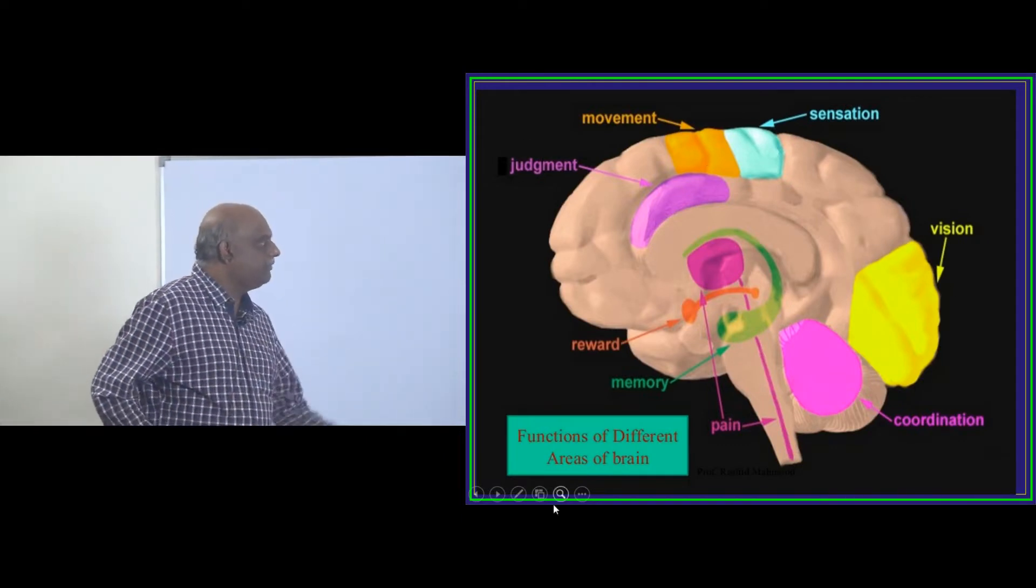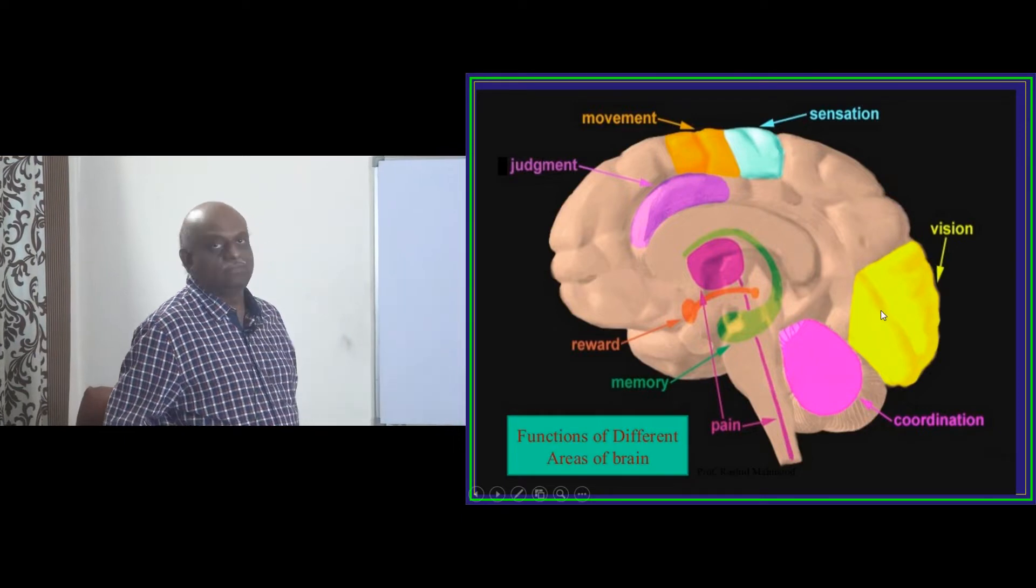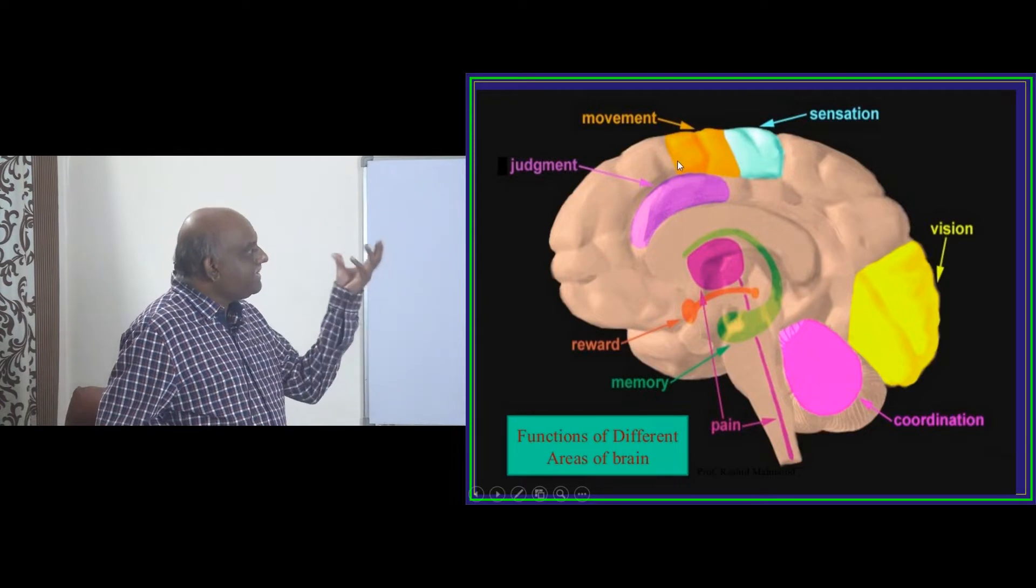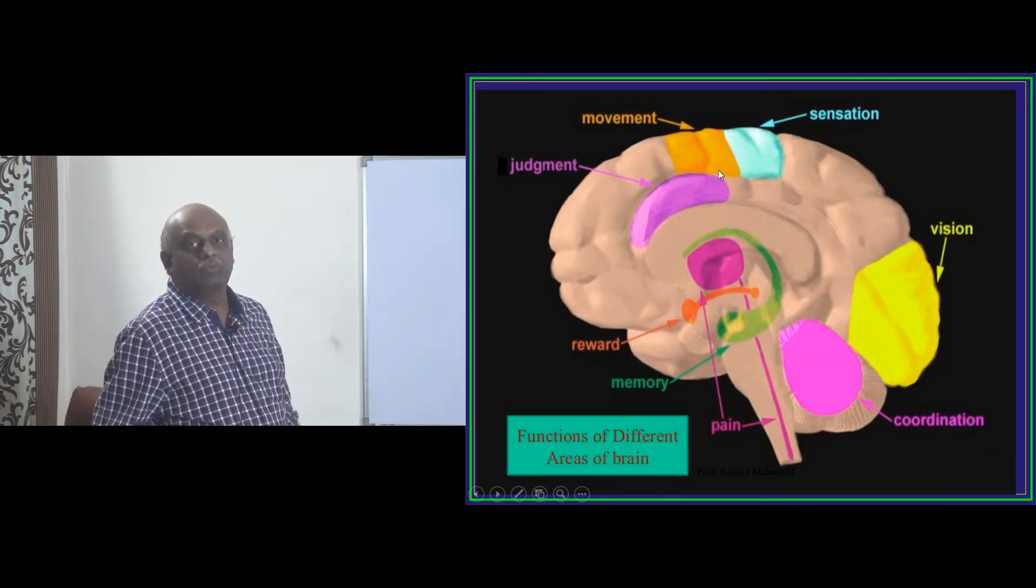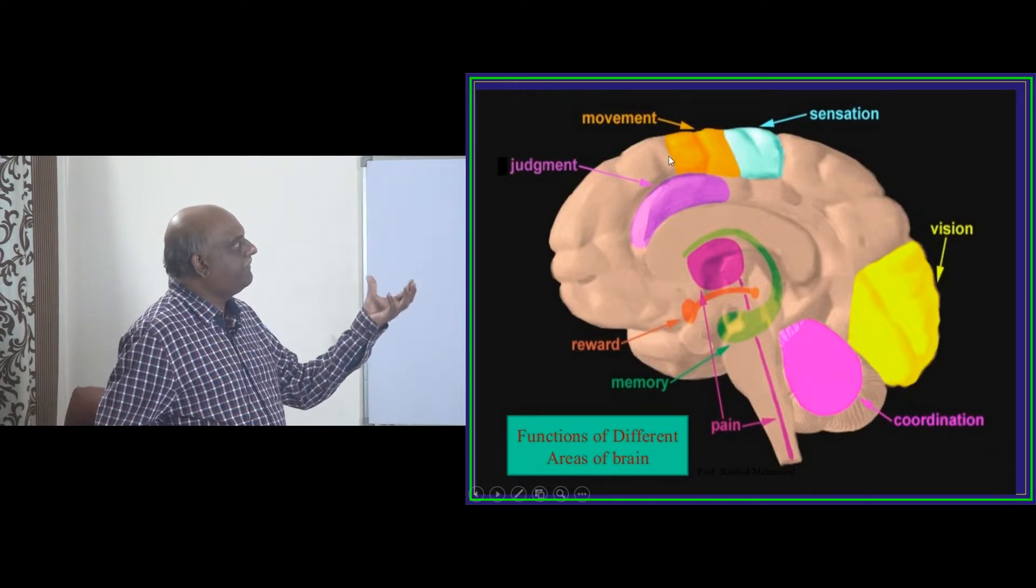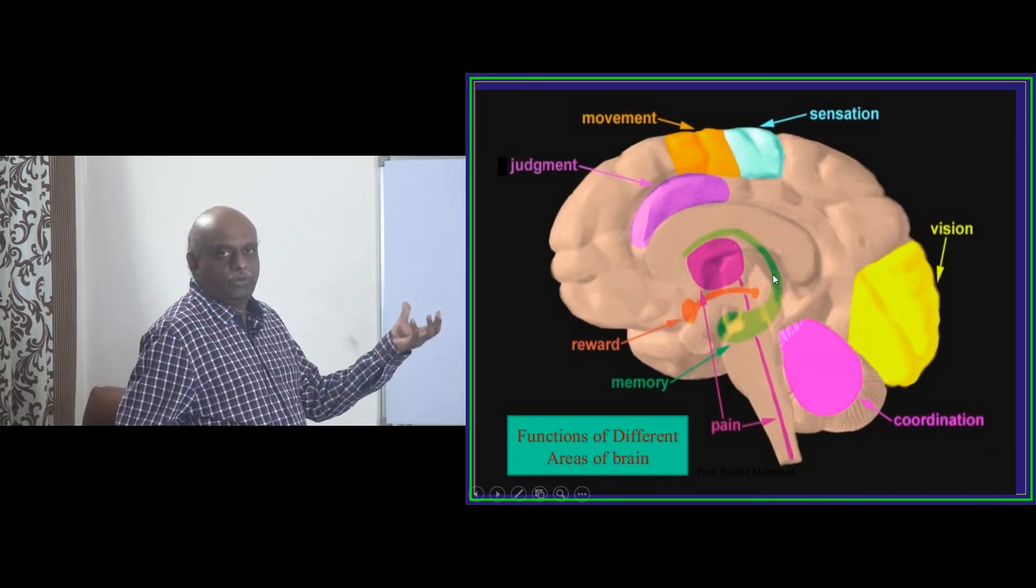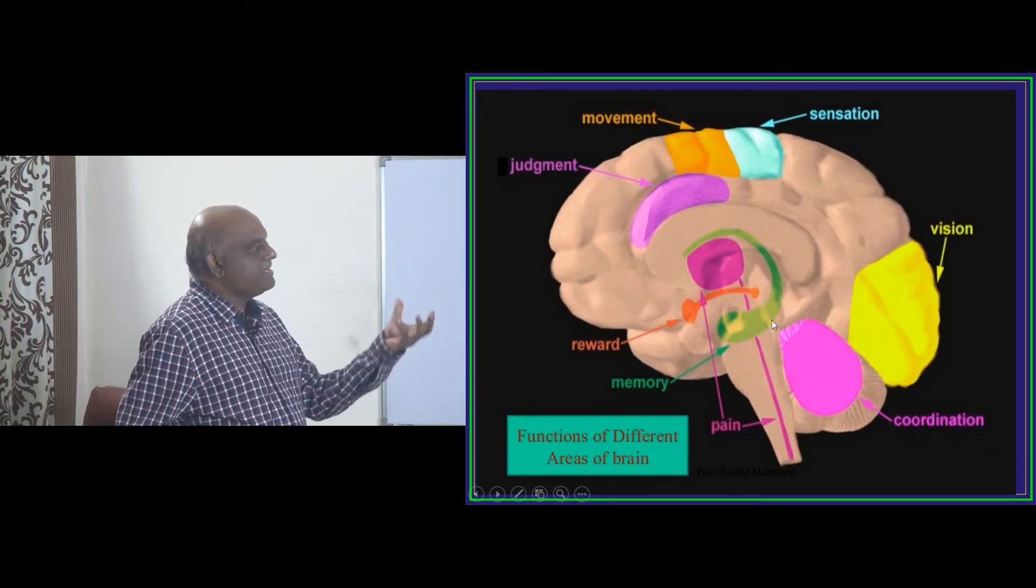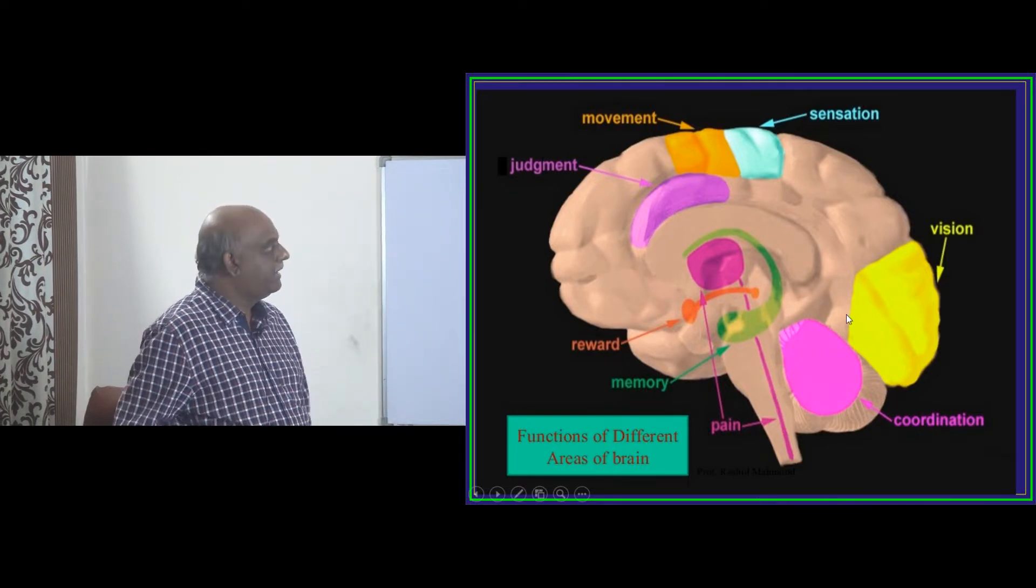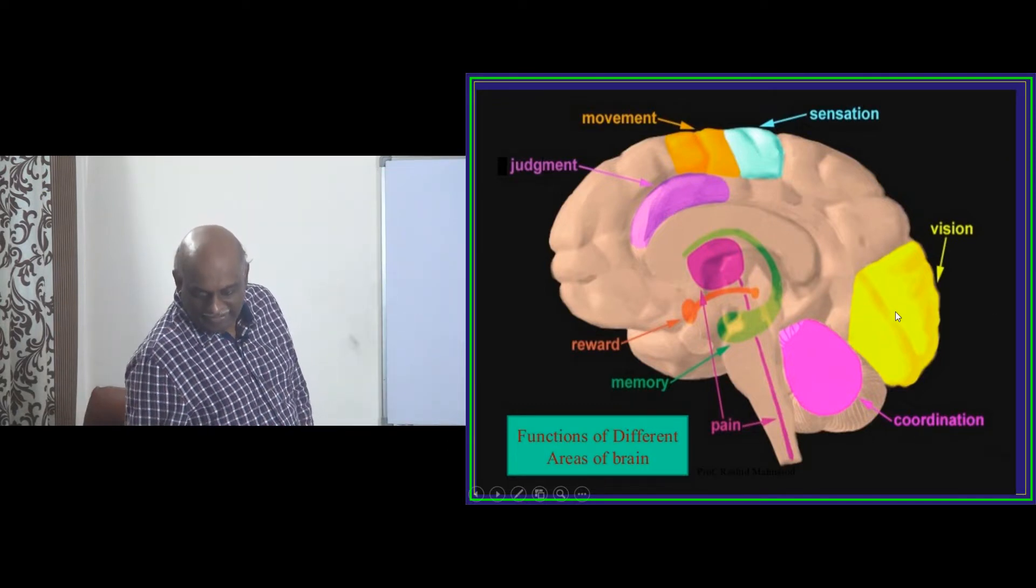Doctor, if you look at the brain, occipital lobe is for vision. Then post-central gyrus is sensation. Pre-central gyrus is movement. And typically in the area which is inferior frontal, you have the judgment. Then you have the limbic system, Papez circuit, where the reward memory sensations are there. And the pain is carried through the spinal cord. And coordination is done by the cerebellum is what you have to basically remember.